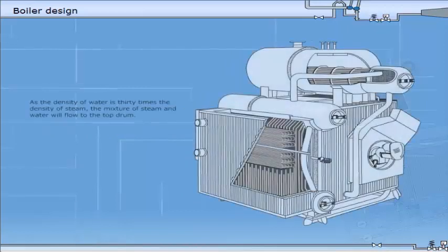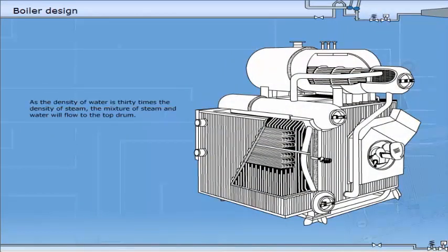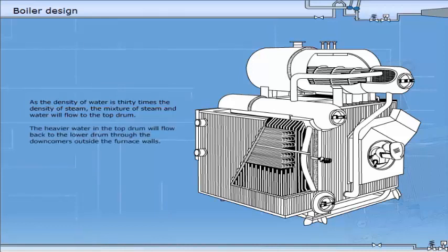As the density of water is 30 times the density of steam, the mixture of steam and water will flow to the top drum. The heavier water in the top drum will flow back to the lower drum through the downcomers outside the furnace walls. The steam-water mixture travels around in the boiler at a velocity of 0.3 to 1 meters per second.